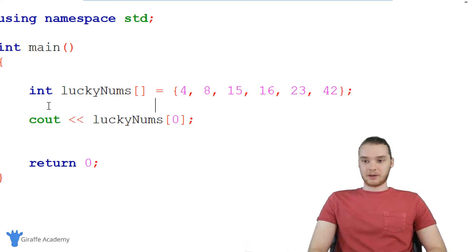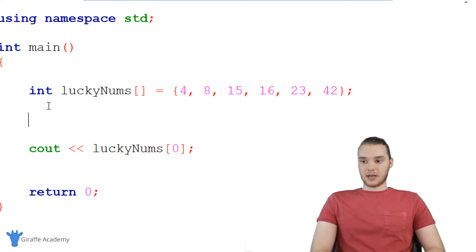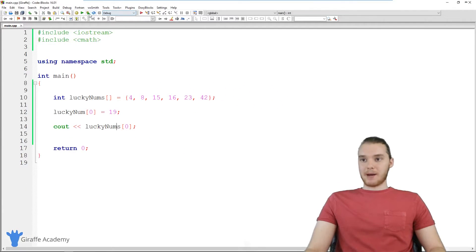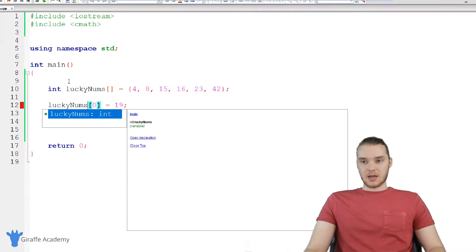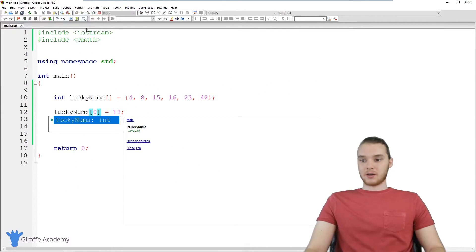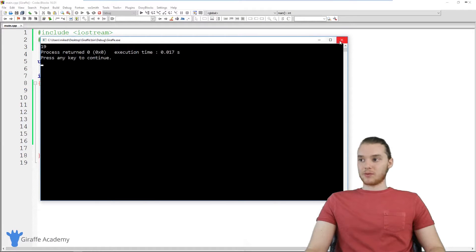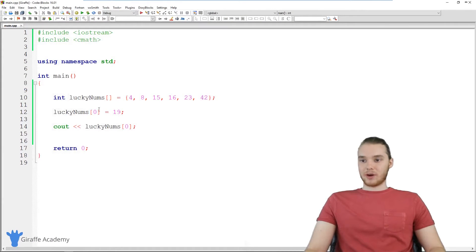We can also modify an element in the array. So I could say lucky nums, and let's say I wanted to change the first element. I can say lucky nums zero and I could give this a different value. So I could set this equal to 19, for example. Now down here, when I print out lucky nums zero, I'm actually going to be printing out 19. So you can see we're able to modify one of the indexes inside of that array.